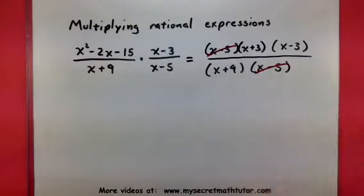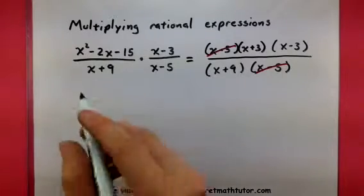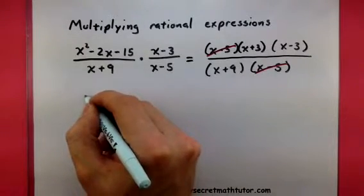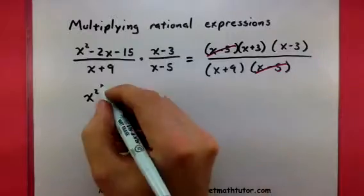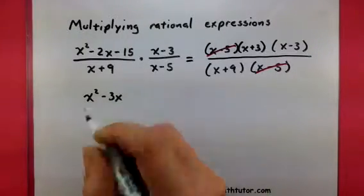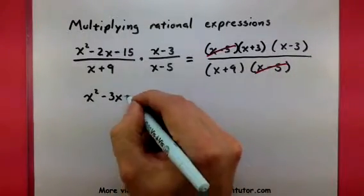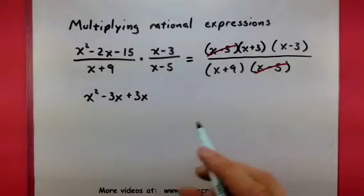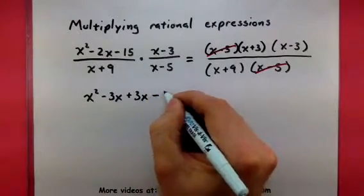So up top, I can multiply together these two parts and see what I get. So x times x, x squared, a negative 3x for the outside, a positive 3x for the inside, and looks like a negative 9 for my last terms.